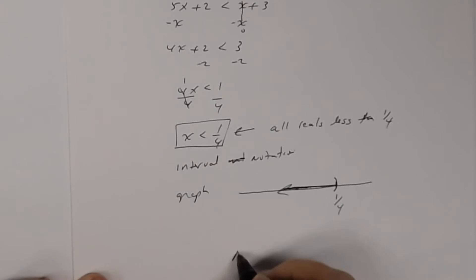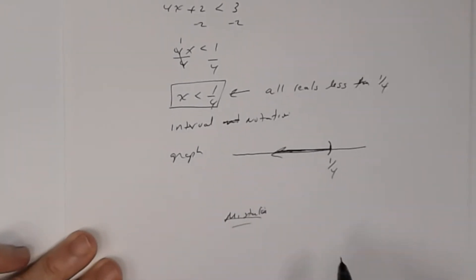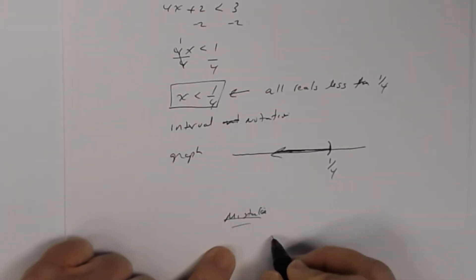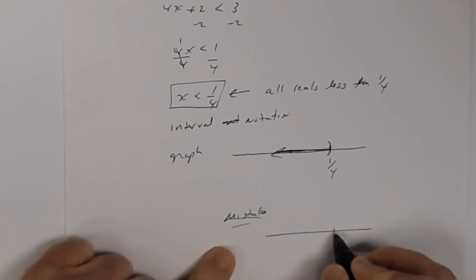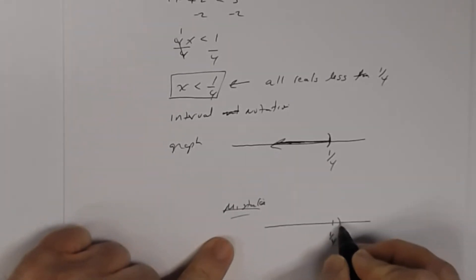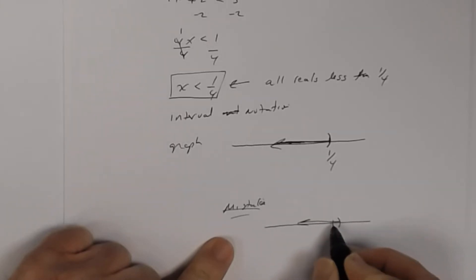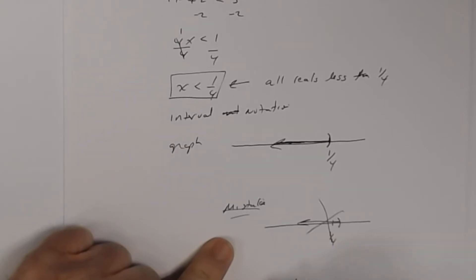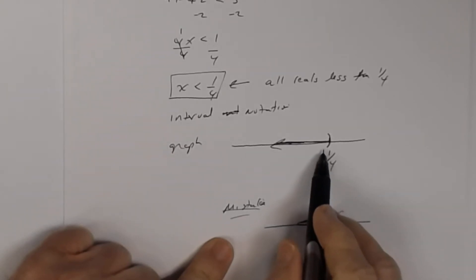Here's a common mistake students make: they'll put 1/4 on the number line, but then draw the parentheses to the left or right of the notch instead of on it. Don't put the parentheses somewhere else if the notch represents 1/4 — place the parentheses directly on that mark.